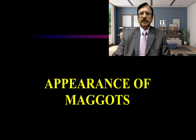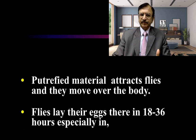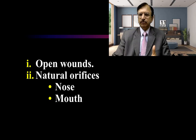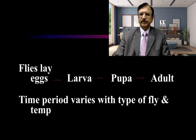Regarding the appearance of maggots — putrefied material attracts flies and they move over the body. Flies lay their eggs and they hatch in 18 to 36 hours, especially in open wounds, natural orifices — nose, mouth, eyes, vagina, and anus. They lay eggs in 24 to 36 hours when foul-smelling gases are emitting and attracting the flies.